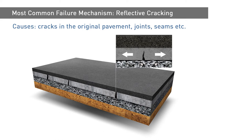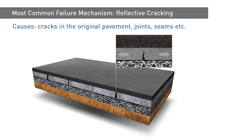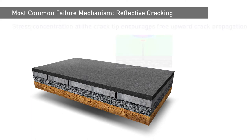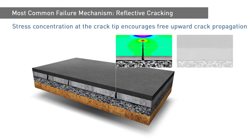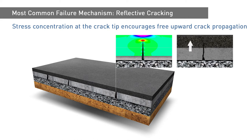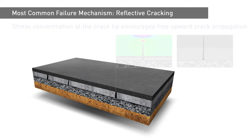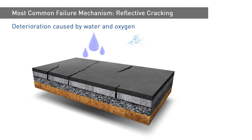Typical causes of this type of cracking include cracks in the original pavement, joints, seams and excavations for utility lines, sewers or road widening schemes. Exposure to traffic loads and daily or seasonal temperature variations, particularly in the form of freeze-thaw cycles, induces stress concentrations at the crack tip that encourage free upward crack propagation. Should the reflective cracks reach the surface, then the situation rapidly deteriorates due to the additional ingress of water and oxygen.